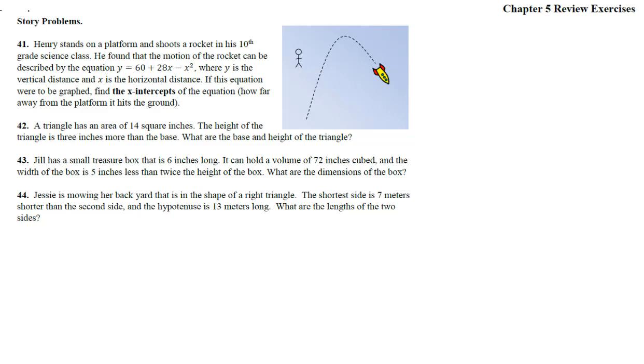Here we are in Chapter 5, Review Exercises with the Story Problems, numbers 41 through 44. So Henry stands on a platform, there's Henry, and he shoots his rocket in his 10th grade science class. He found that the motion of the rocket can be described by this equation.